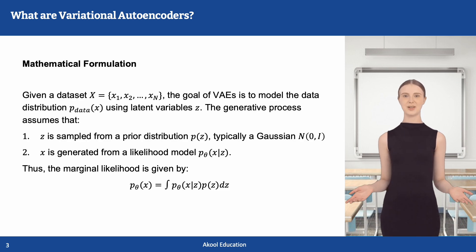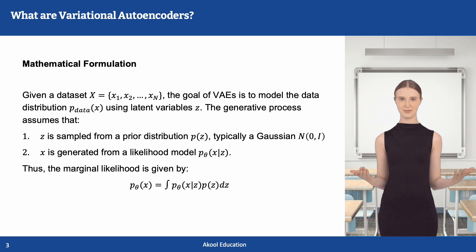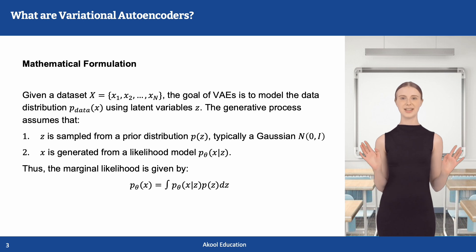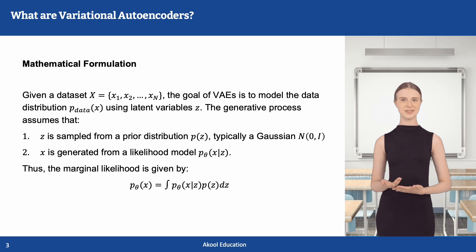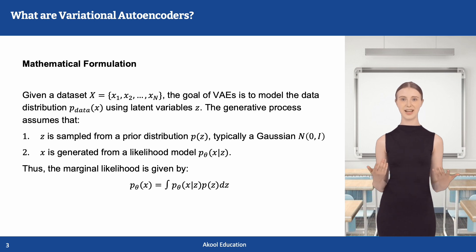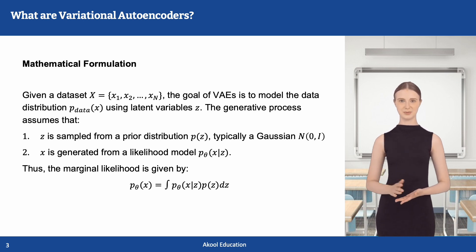Let's understand variational autoencoders mathematically, starting with some notation. Given a dataset, each example is represented by X. The generative process assumes that Z is sampled from a prior distribution P of Z, typically a Gaussian distribution. The observed data X is then generated through a transformation of Z, which corresponds to a likelihood model P of X given Z. The transformation is parameterized by a neural network with trainable parameters theta. Thus, the marginal likelihood of X can be given by the following equation.